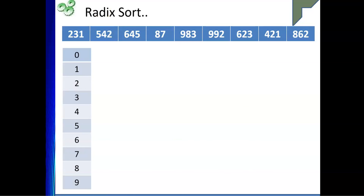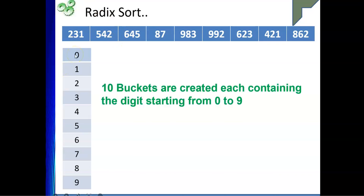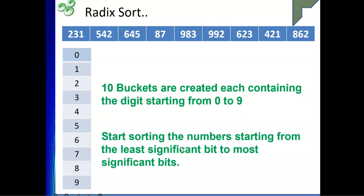We consider 10 buckets, each corresponding to the digits from 0 to 9. We will start sorting from the least significant digit to the most significant digit.